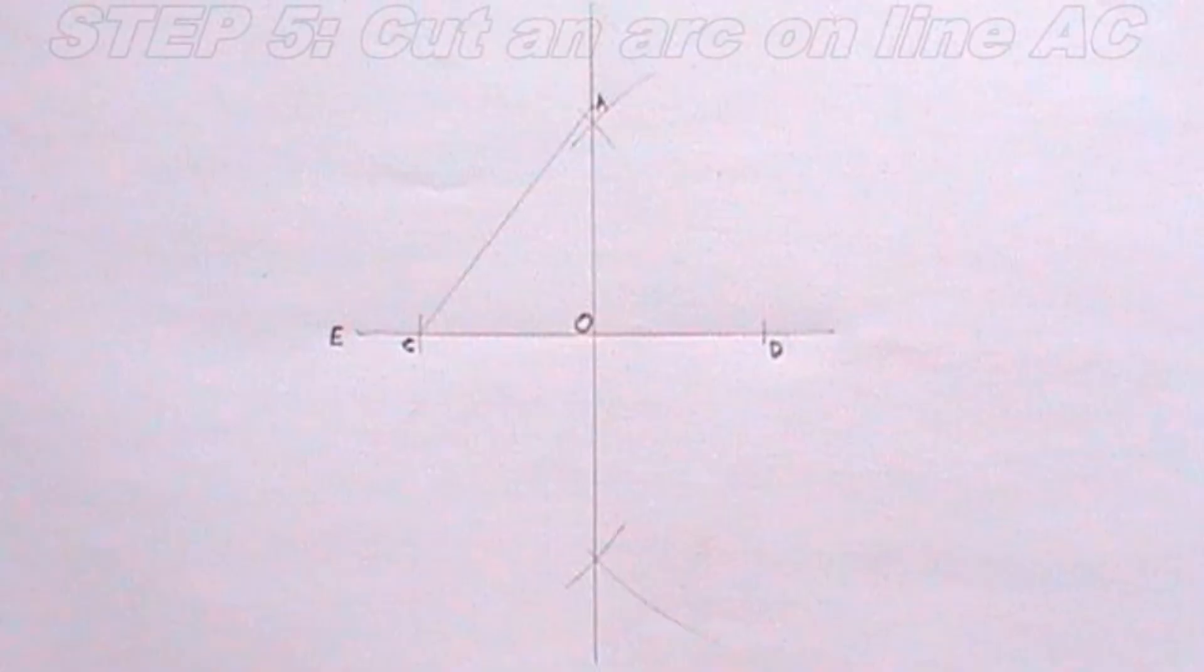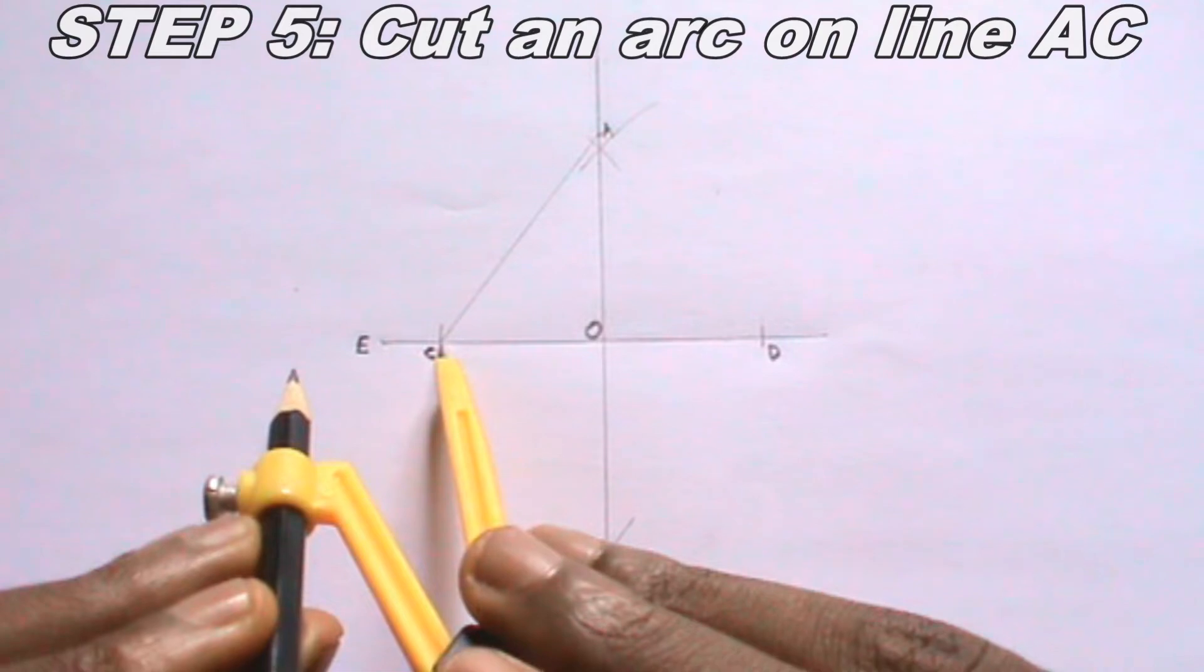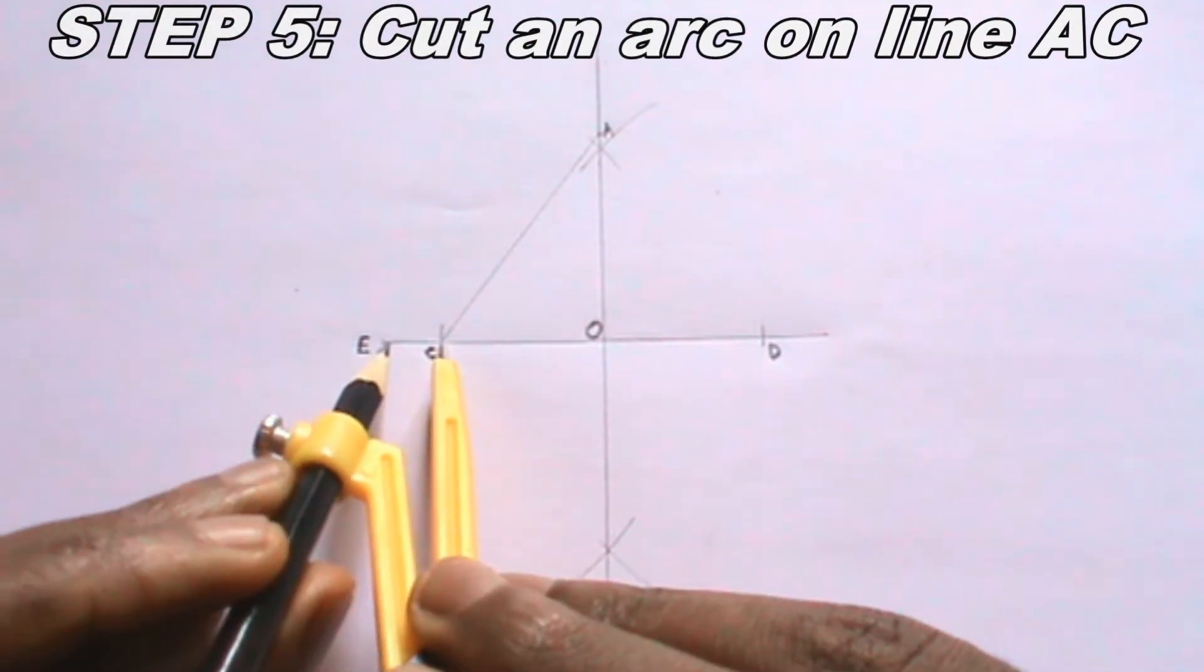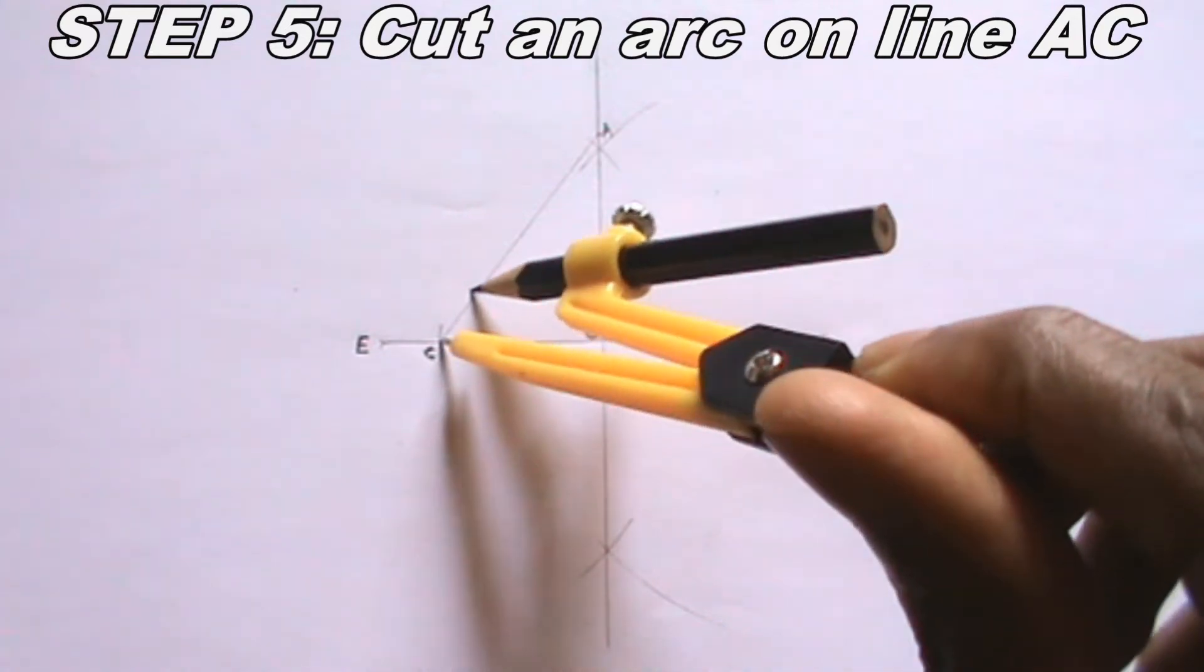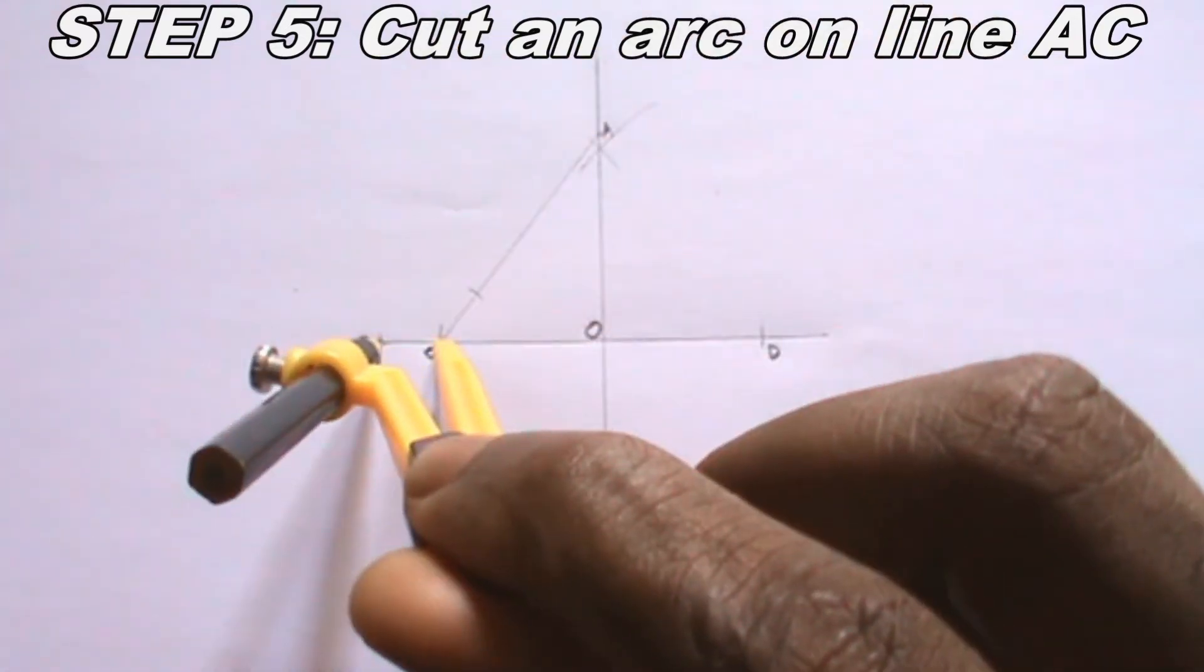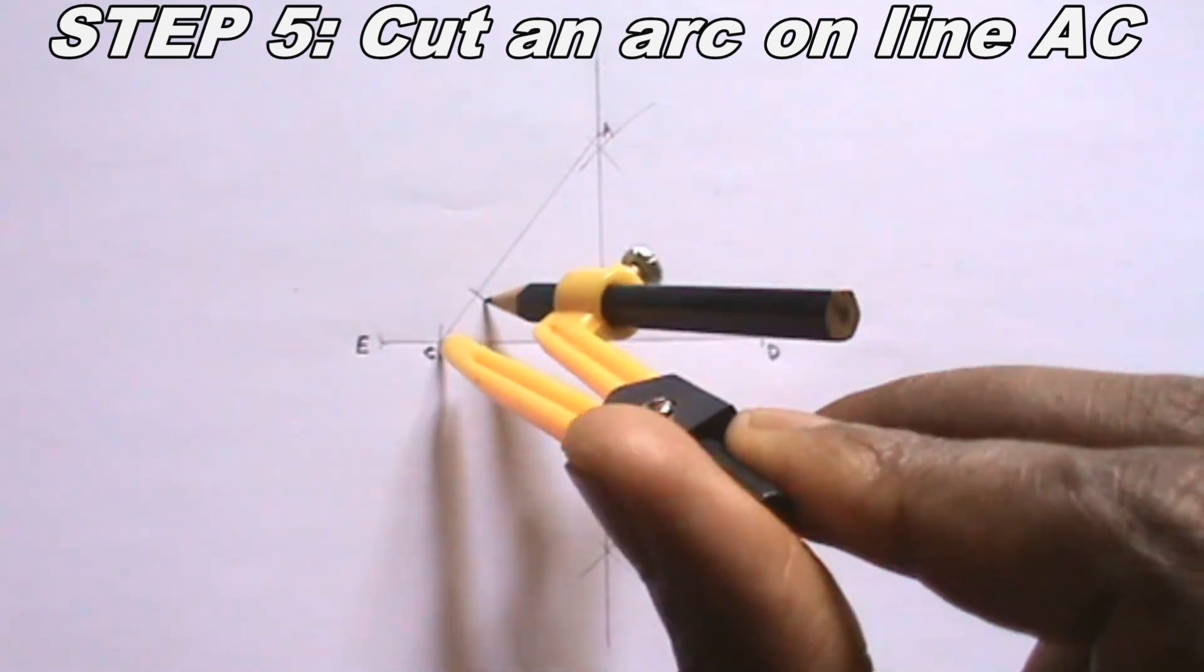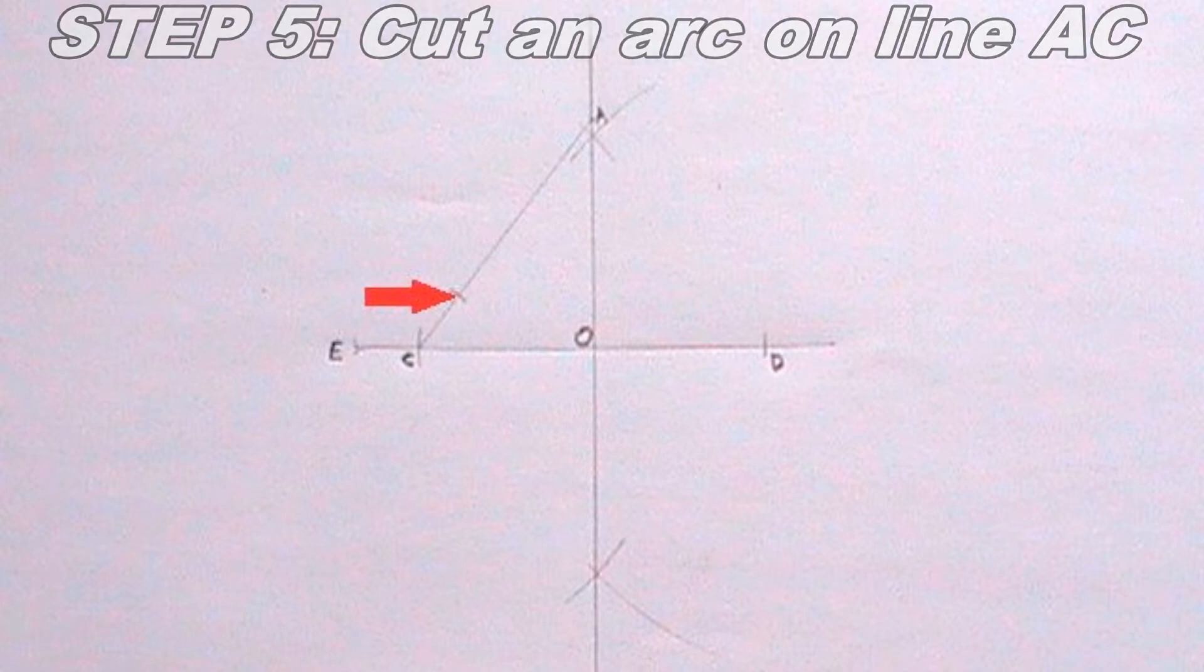The next step I will take is to cut an arc on the line I just drew, which is line A C. The radius must be equal to line C E. Having done that, I will call the point where the arc intersects line A C, F.